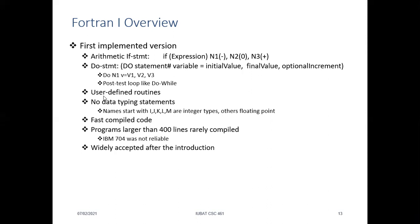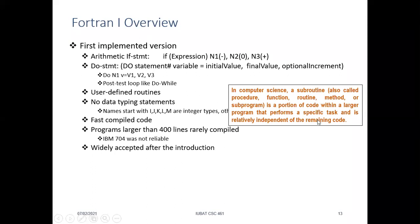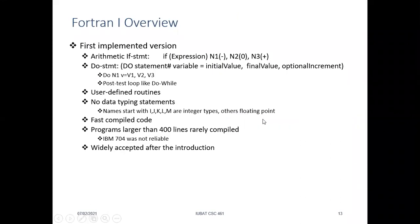FORTRAN I also introduced user-defined routines. A routine — also called a function — is a portion of code that programs can call for a specific task. It also had different integer register types and floating-point variables. The code compiled fast, but due to machine efficiency constraints, code could not be larger than 400 lines; beyond that, there were reliability issues and it could not compile properly.